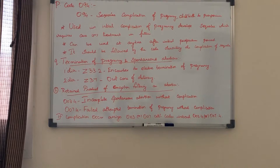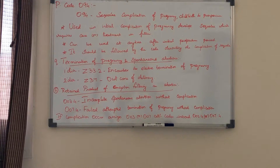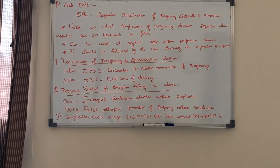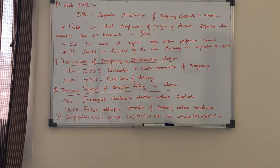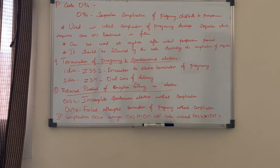The next topic is code O94, the sequela code. Sequela means the late effects of any condition. O94 describes sequela of a complication of pregnancy, childbirth and puerperium. It is used when an initial complication of pregnancy develops a sequela that requires care and treatment in the future. It can be used anytime after the initial postpartum period. It should be sequenced like all sequela codes, followed by the code describing the complication of the sequela.